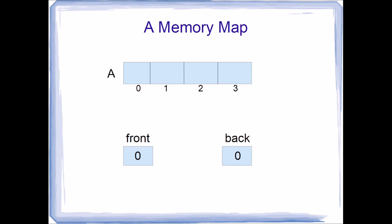When front and back are both the same value, that represents an empty queue. We initialize both to zero, so our queue is empty. That isn't to say the array is empty — there's no such thing as an empty memory location. It just means theoretically there's nothing in our queue yet. Front equals back means empty queue.